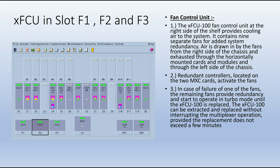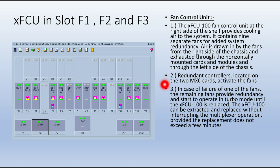The XFSU occupies slots F1, F2, and F3 — three slots for the fan control unit. This unit, located at the right side of the shelf, provides cooling air to the system. It contains nine separate fans for added redundancy. Air is drawn in from the right side of the chassis and exhausted through horizontally mounted cards and modules out the left side. Redundant controllers on the two MXC cards activate the fans. If one fan fails, the remaining fans provide redundancy and operate in turbo mode until the XFSU is replaced.